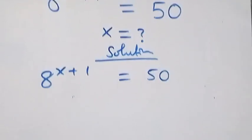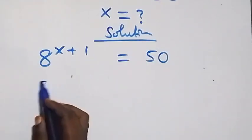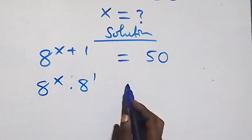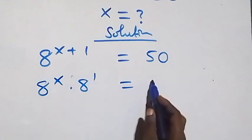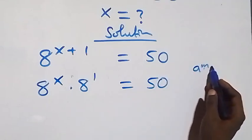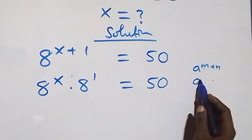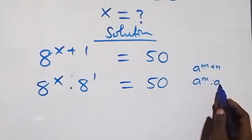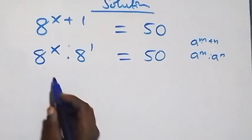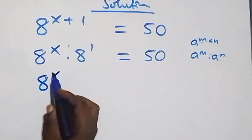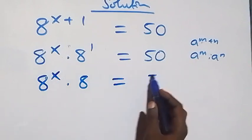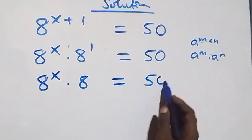We can rewrite this as 8 raised to power x times 8 raised to power 1 equals 50. This follows from the law of indices: a raised to power m plus n is the same as a raised to power m times a raised to power n. So 8 raised to power x times 8 equals 50.